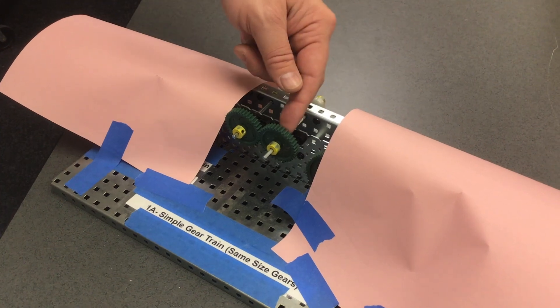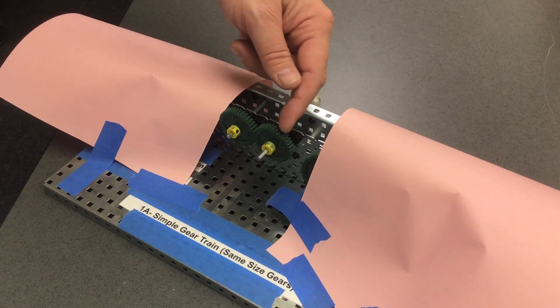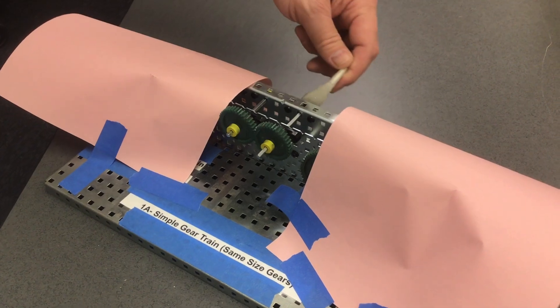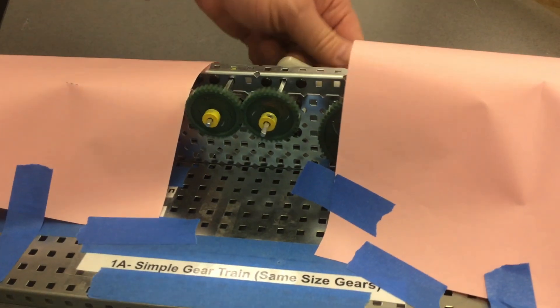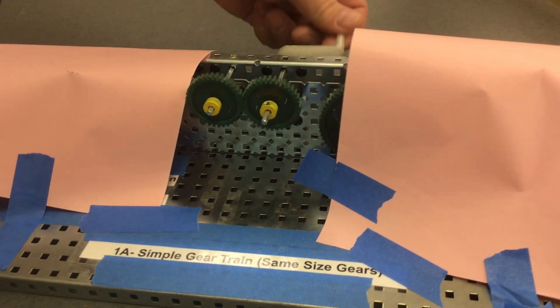Notice the relationship of these two gears. When one goes clockwise, the other one will go counterclockwise. Notice the type of motion or movement is rotary.